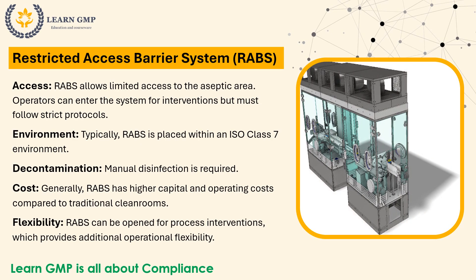Restricted Access Barrier System — RABS Access: RABS allows limited access to the aseptic area. Operators can enter the system for interventions but must follow strict protocols. Typically, RABS is placed within an ISO Class VII environment.